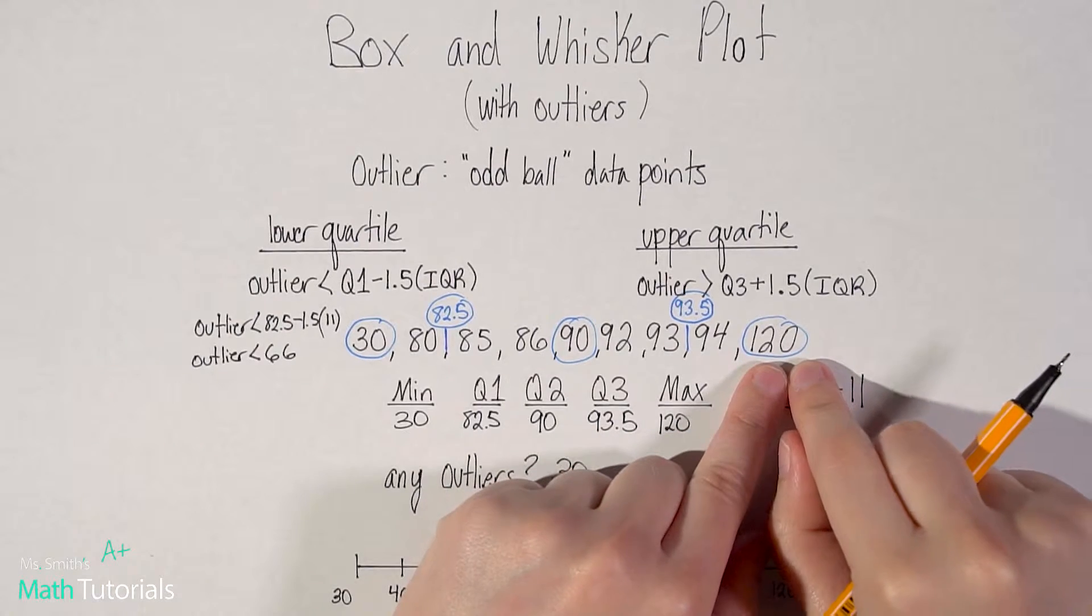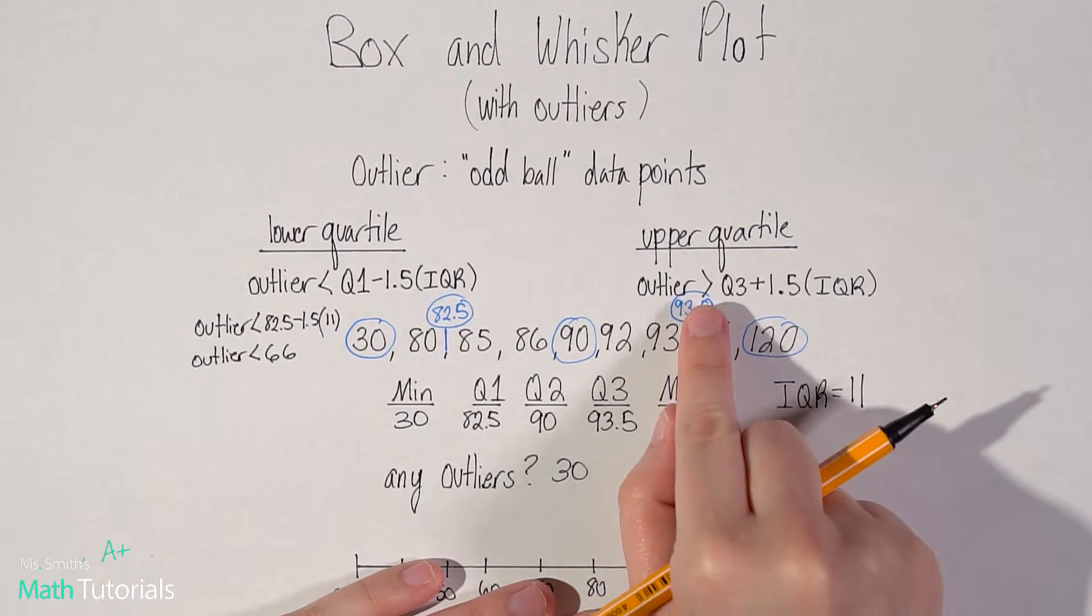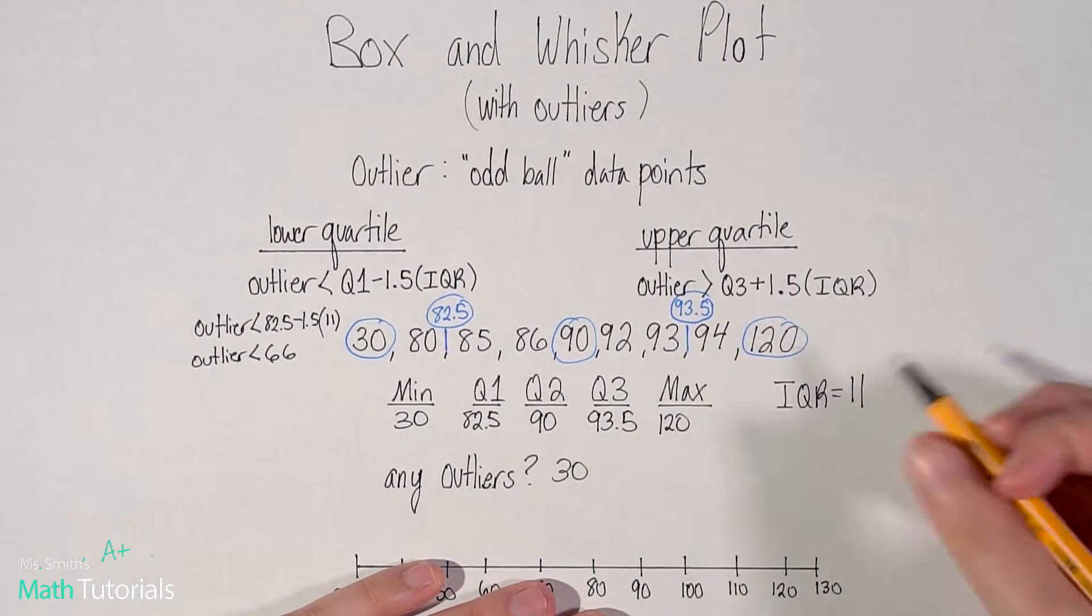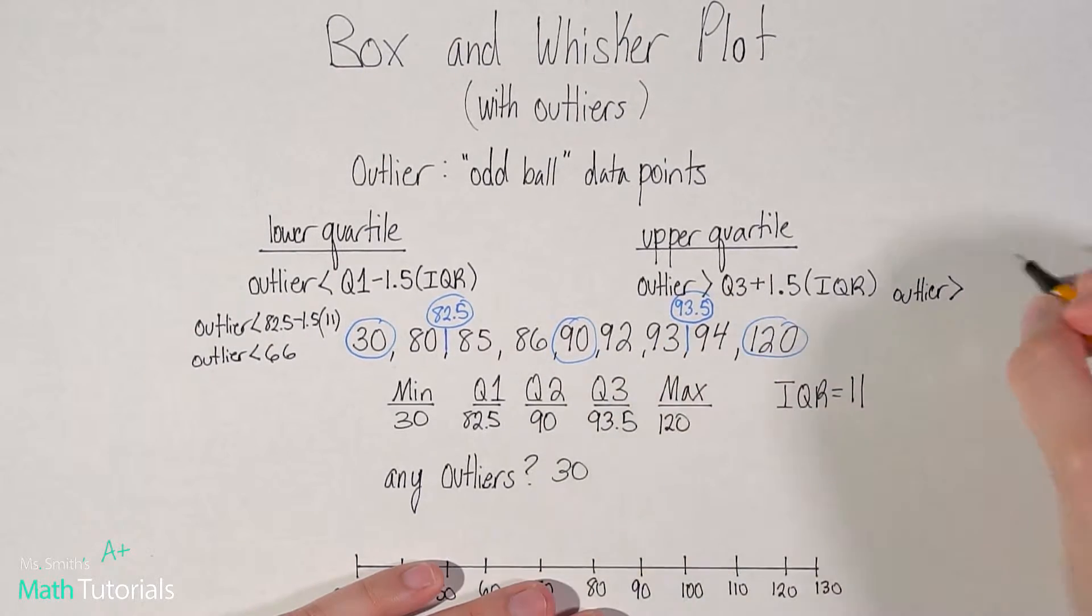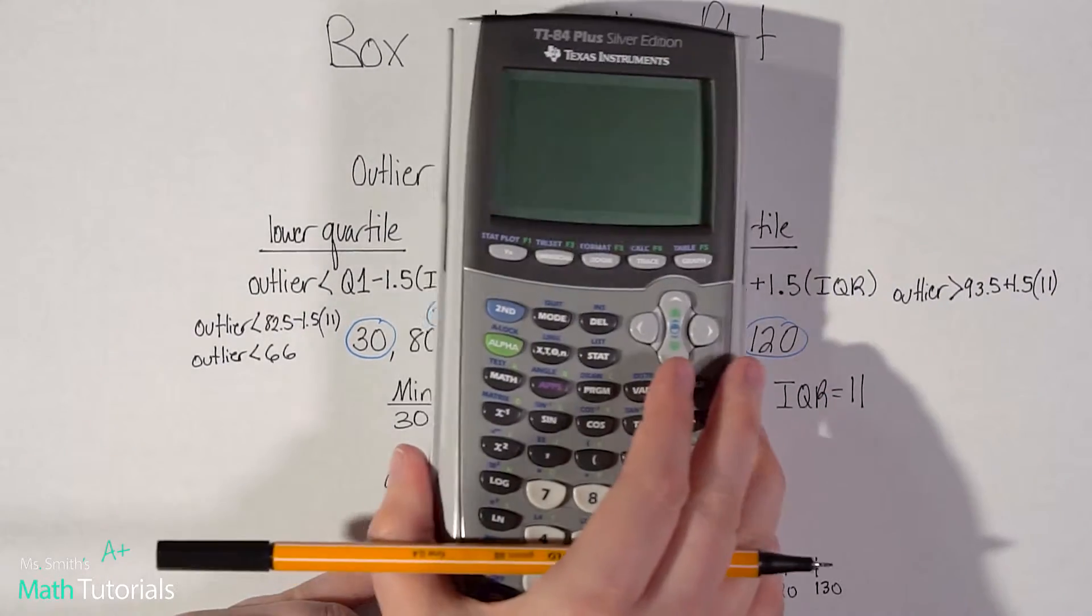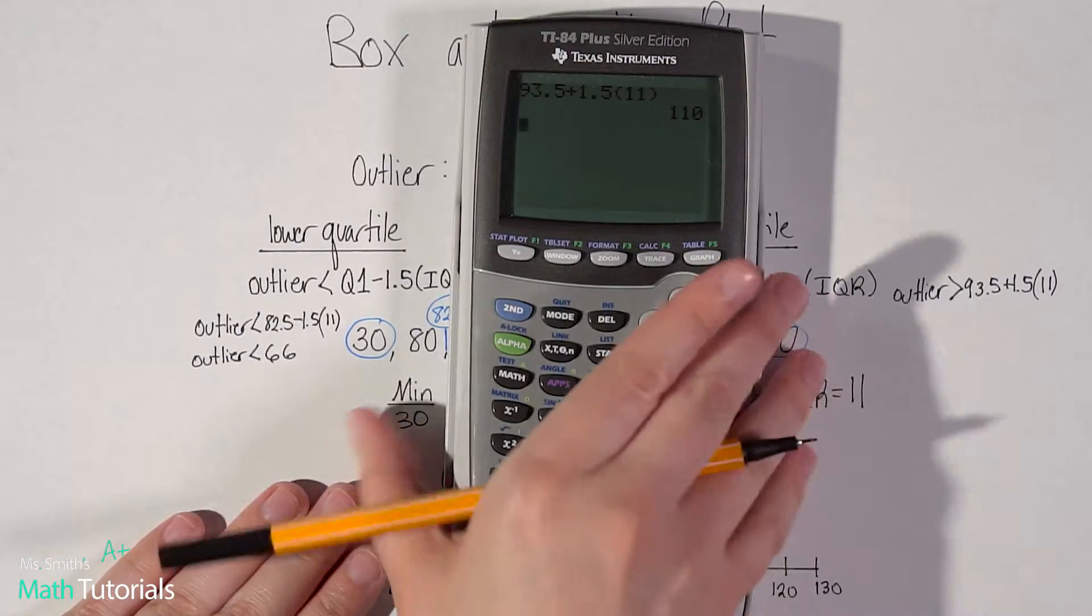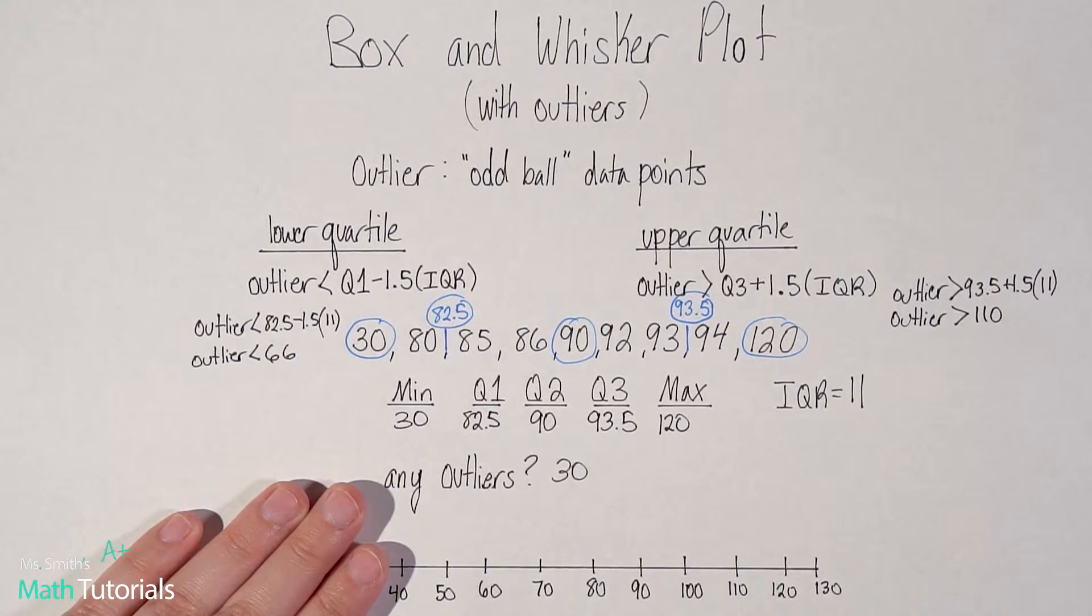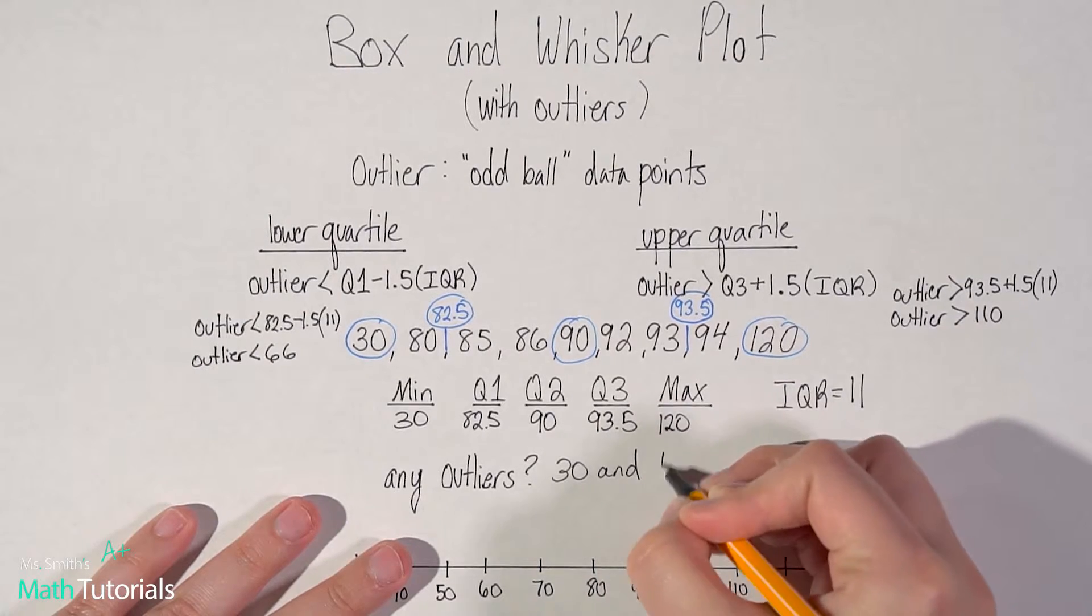Now we need to do the same thing up here for this 120 and see, is that an outlier? So the formula is similar, but a little different. An outlier would be greater than Q3 plus 1.5 times the IQR. So this is for the upper quartile since we're in the top half now. So outlier would be greater than our Q3, which is 93.5, plus 1.5 times our IQR of 11. Let's put that in the calculator. 93.5 plus 1.5 times 11. So 110. So that tells me that an outlier would have to be greater than 110. So is 120 greater than 110? Yes. So we have another outlier.